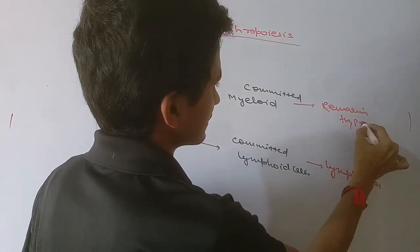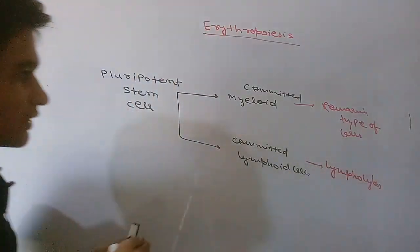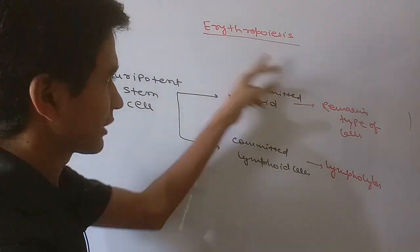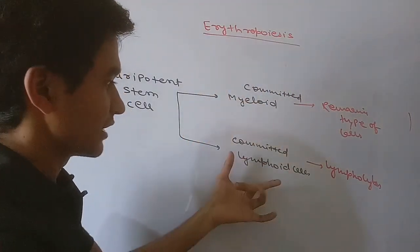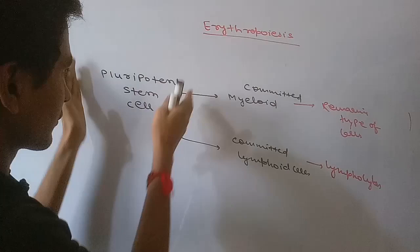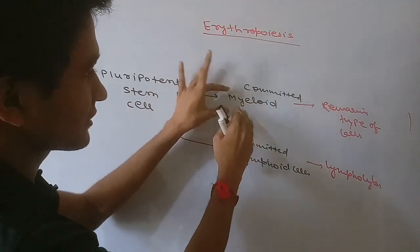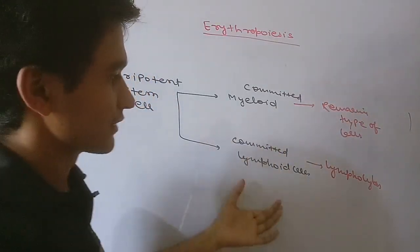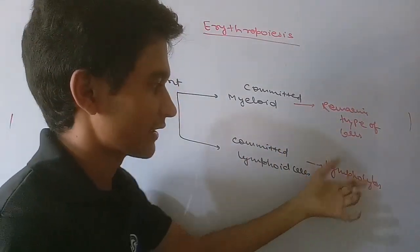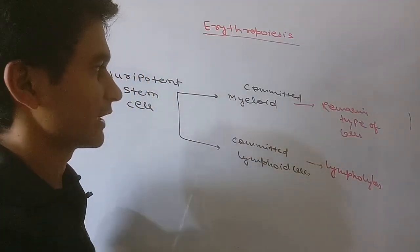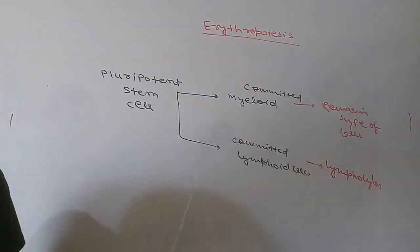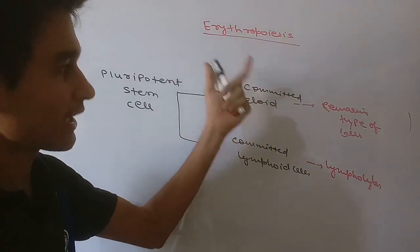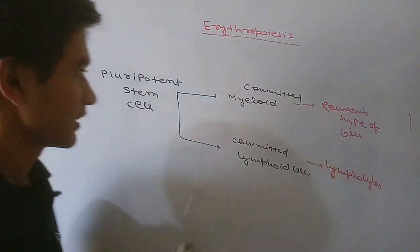The pluripotent stem cell can give rise to any type of cell. Once divided, the cells are committed — committed myeloid cells will only form myeloid-type cells, and committed lymphoid cells will only form lymphocytes. We are interested in the myeloid pathway because we are studying the formation of RBC.